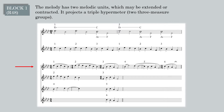Although the association is far from perfect, in general triple hypermeter is associated with the female characters — the old woman, the young women — and often with the pastoral mode.